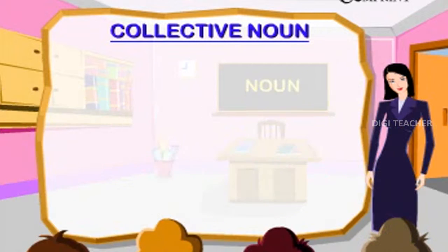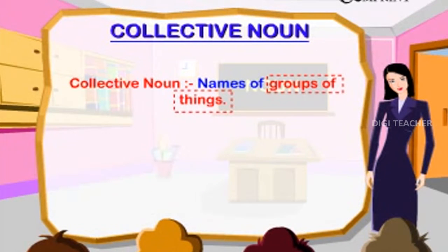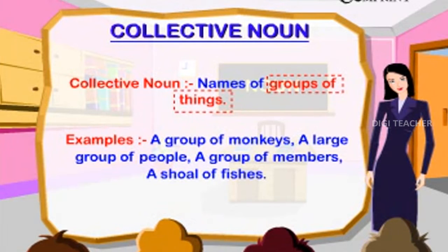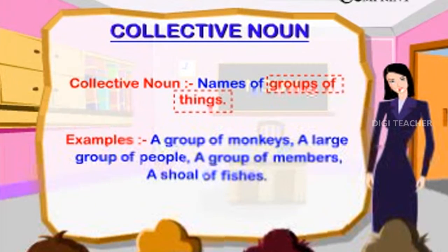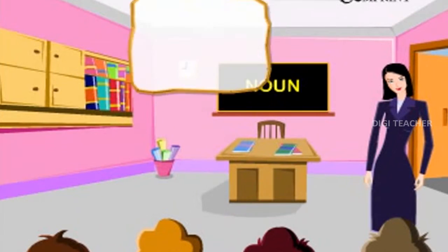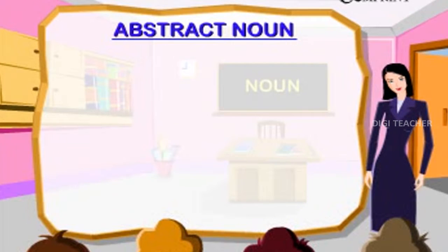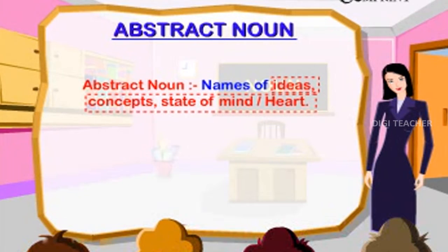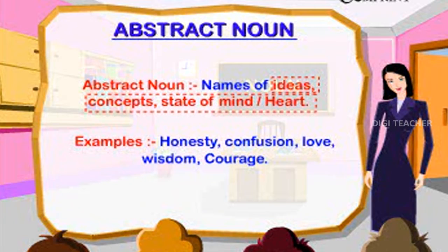Collective Noun: names of groups of things. Examples: a group of monkeys, a large group of people, a group of members, a shoal of fishes. Abstract Noun: names of ideas, concepts, or state of mind or heart. Examples: Honesty, Confusion, Love, Wisdom, Courage.